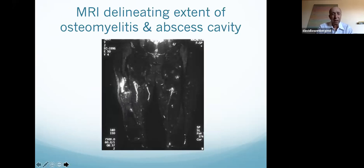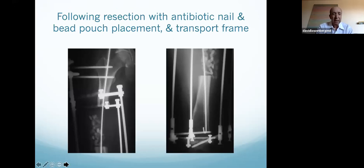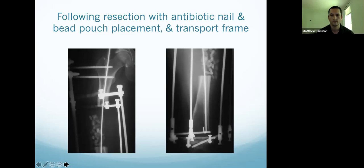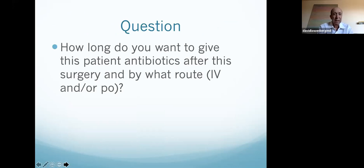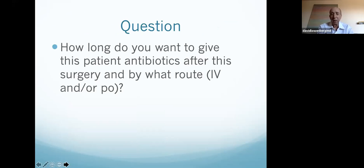I'm going to take you through what we did, and then the questions will start. There's her MRI with the fluid collection at the malunion site. She underwent a long resection, then stabilization with a spanning fixator, and then underwent a bone transport over a nail. My starting question is: this person — antibiotics. Let's start with Samir.